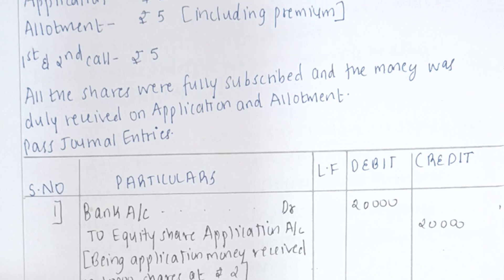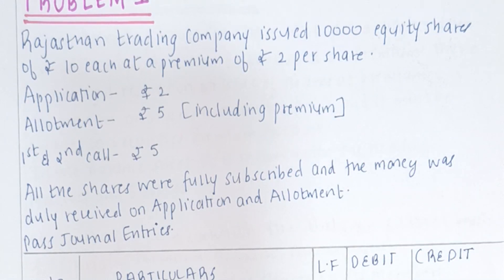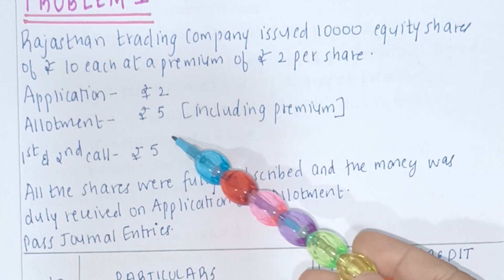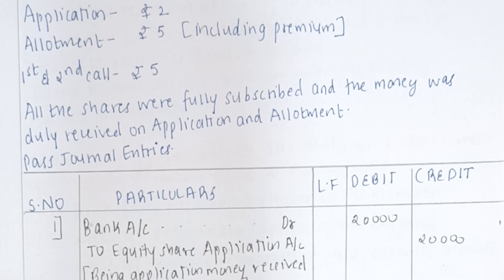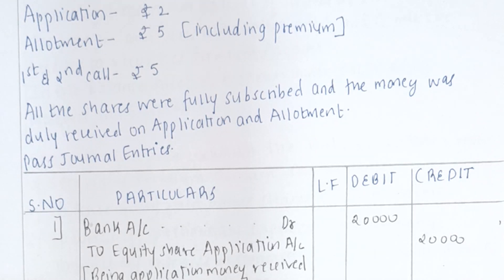First, note that there is a premium of Rs. 2 as stated in the question. Also, allotment is Rs. 5 including premium, so out of Rs. 5, Rs. 2 is for premium, meaning the share capital portion of allotment is Rs. 3. Also note that money was received only on application and allotment — not on the first and second call — so we write only the application and allotment entries.